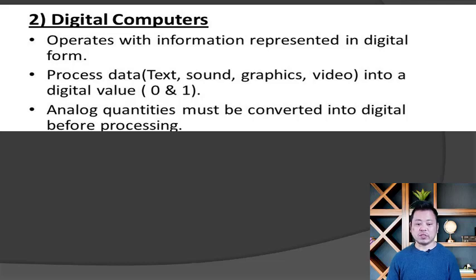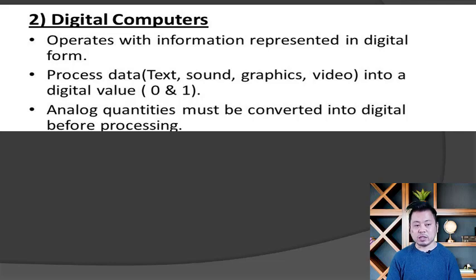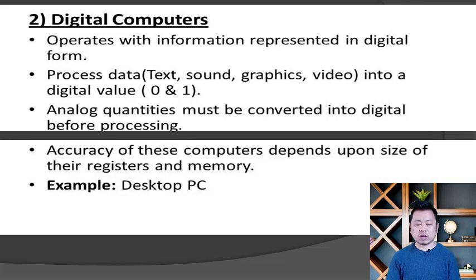For example, the values 0 and 1 are processed. Analogous conditions must be converted into digital form before processing. The accuracy of these computers depends upon the size of their register and memory.